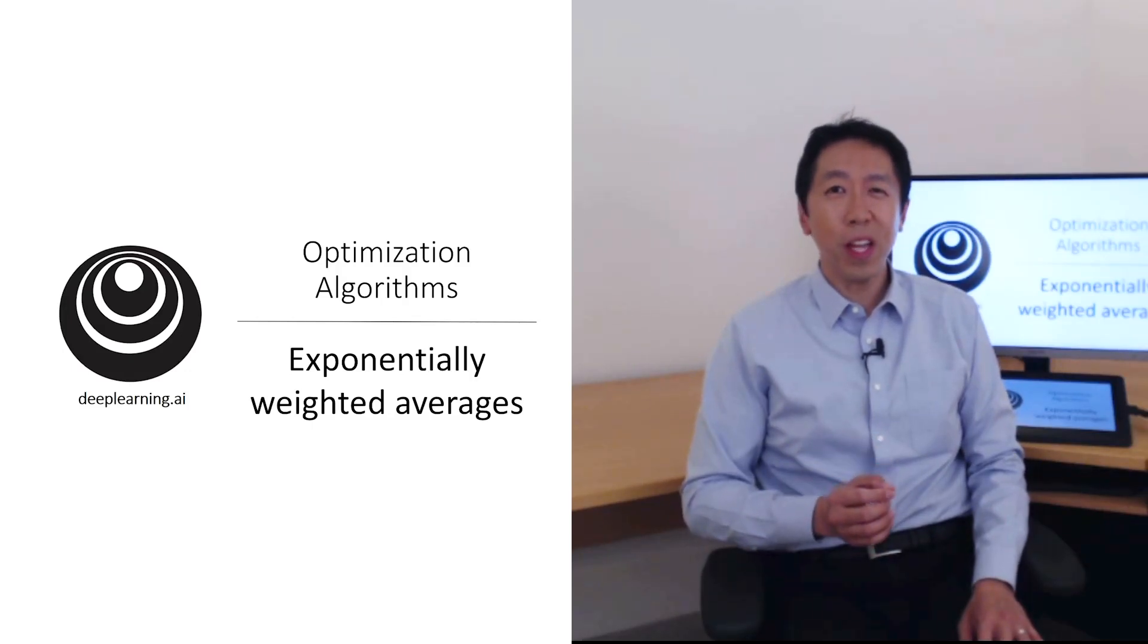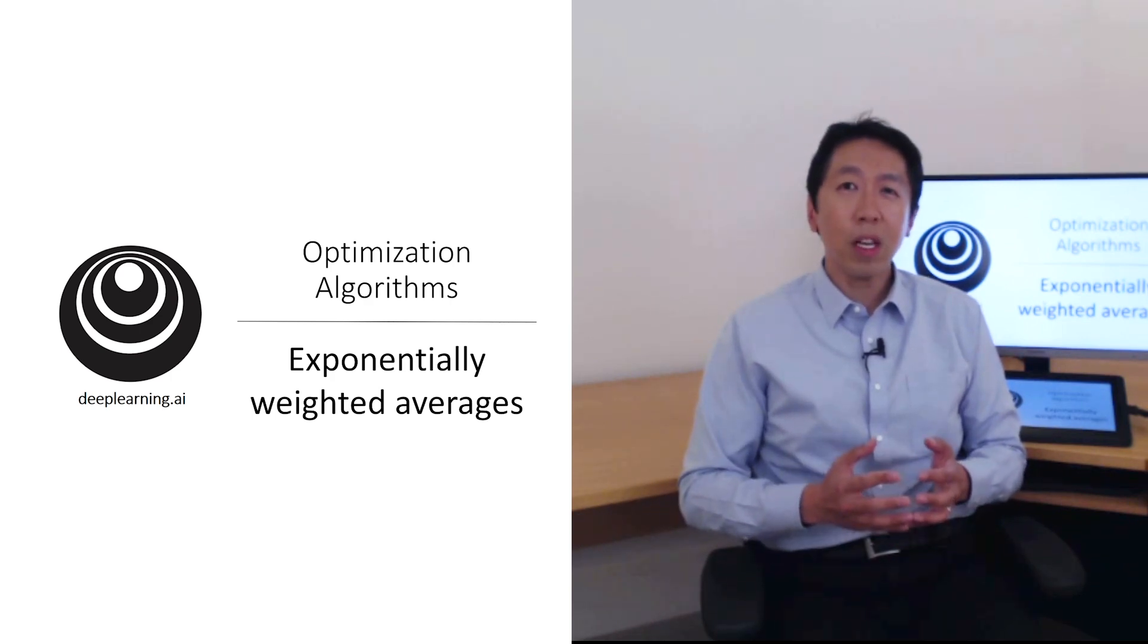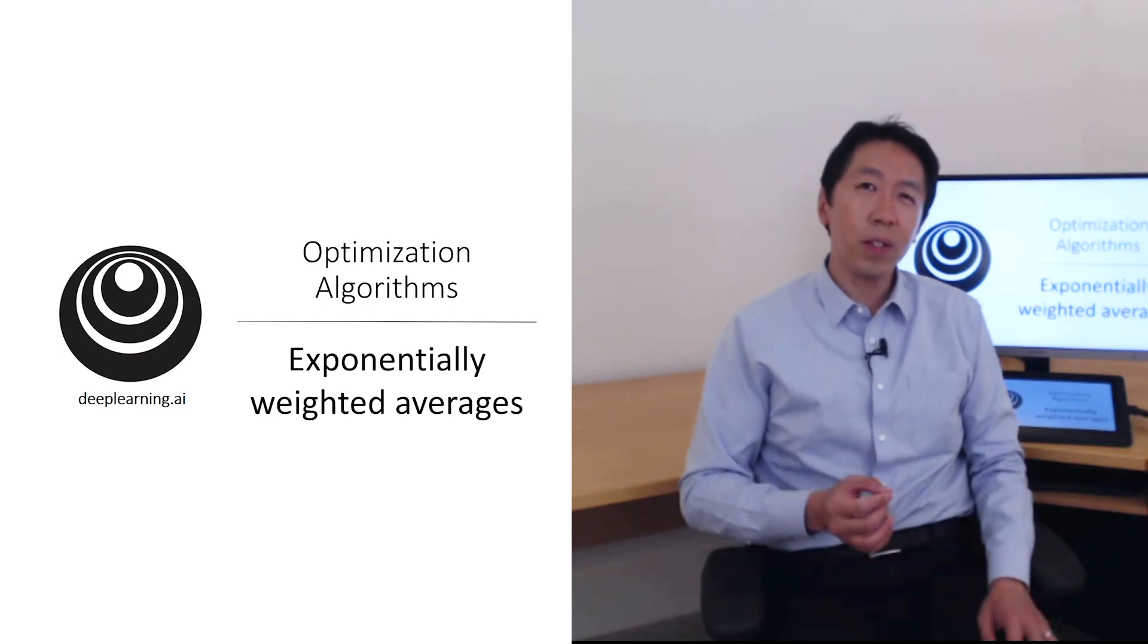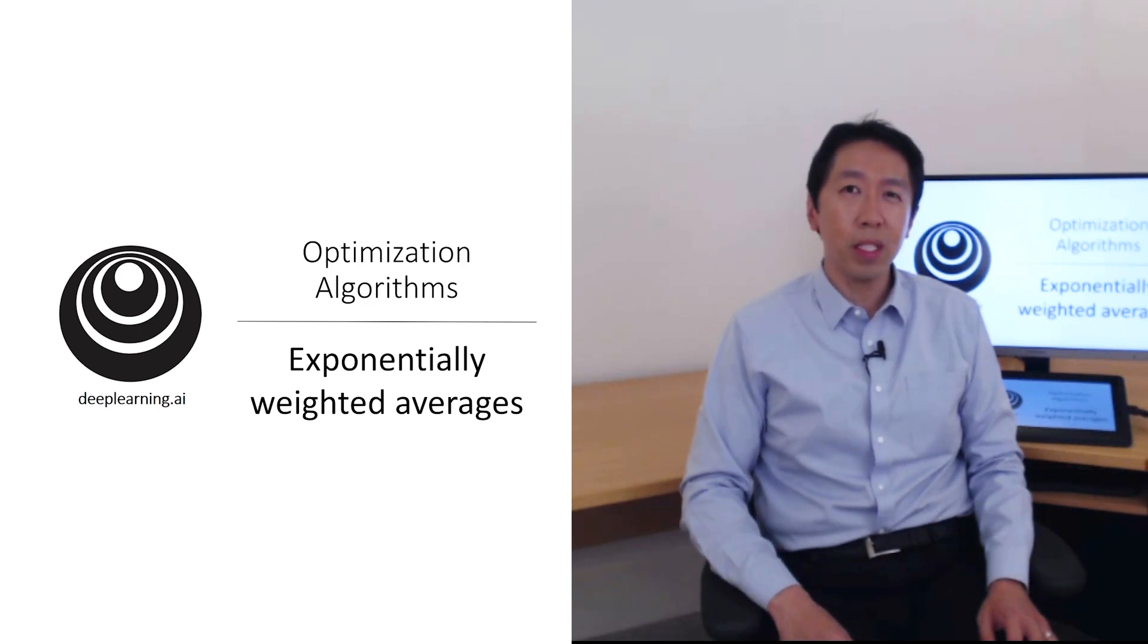I want to show you a few optimization algorithms that are faster than gradient descent. In order to understand those algorithms, you need to be able to use something called exponentially weighted averages, also called exponentially weighted moving averages in statistics. Let's first talk about that and then we'll use this to build up to more sophisticated optimization algorithms.